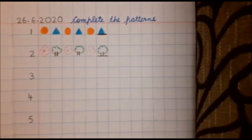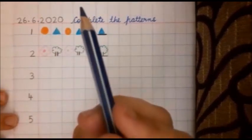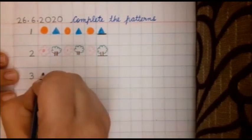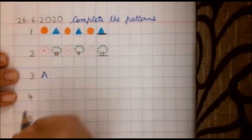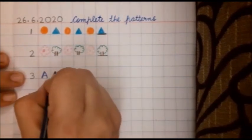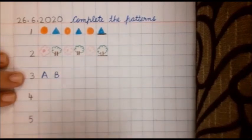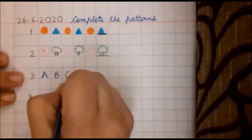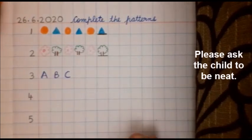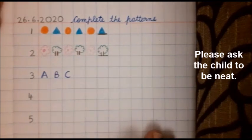Now for the third pattern, I have taken blue colour, dark blue colour. Now see what ma'am is going to write. Which letter is this? A, capital B, capital C. But you do this work very neatly in your notebook. Okay? Do it very neatly.